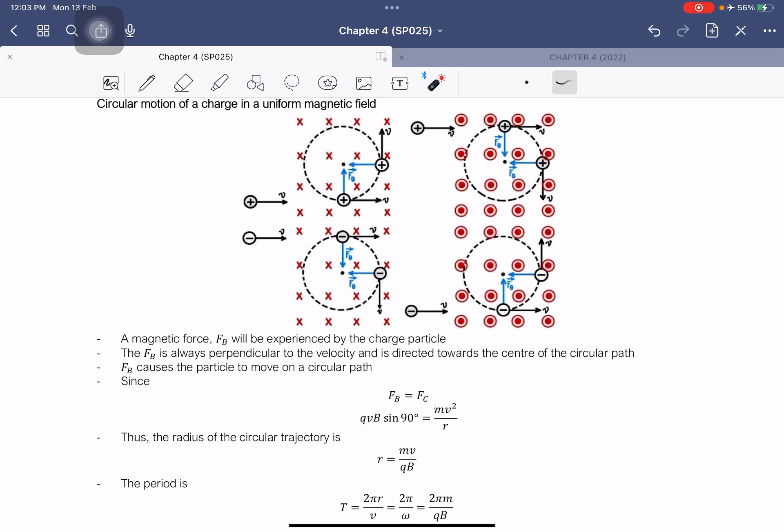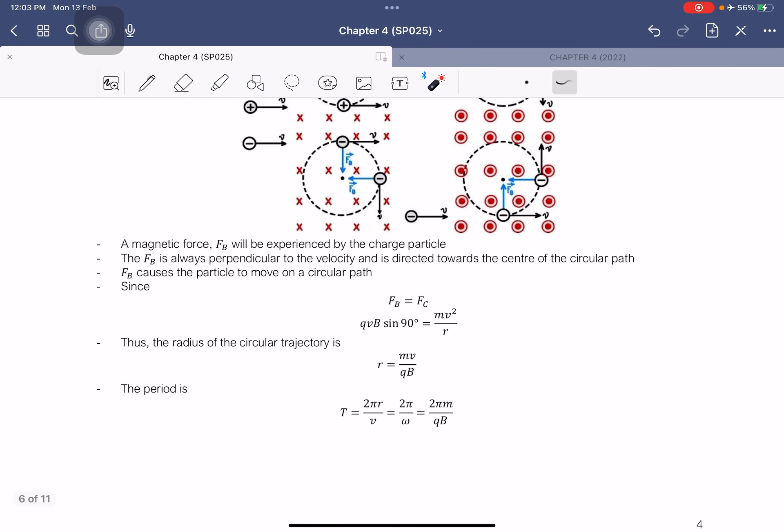The same as we learned last semester for circular motion - the one that causes this particle to move in a circular motion is due to the centripetal force. So we know that the magnetic force will then be equal to the centripetal force. We get an equation for the radius of the circular trajectory, which equals this equation here.